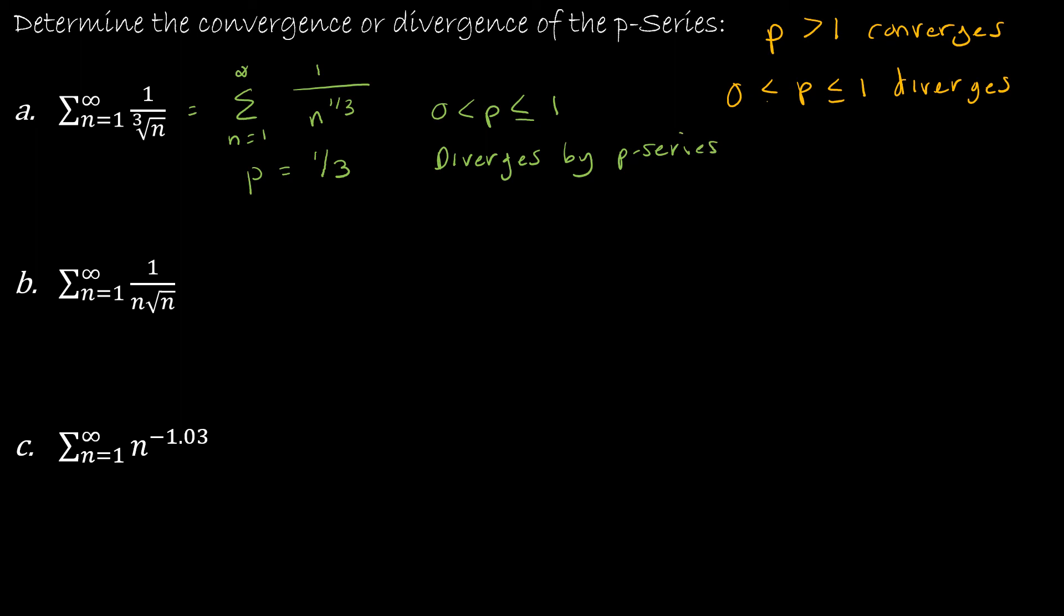Whereas my second example, if I rewrite this, is the summation from 1 to infinity. Remember, this is n to the first, and this is n to the 1 half. So I can rewrite this as 1 over n to the 3 halves, because when I multiply, I add exponents. So that means that p is equal to 3 halves.